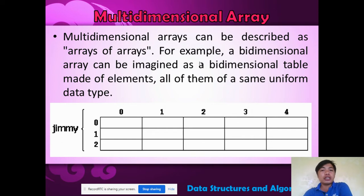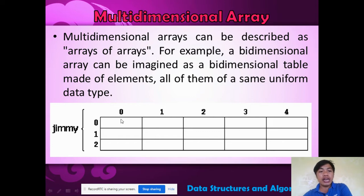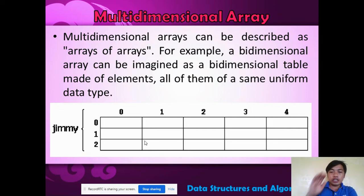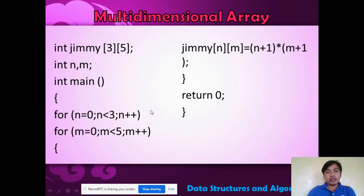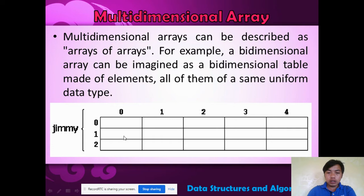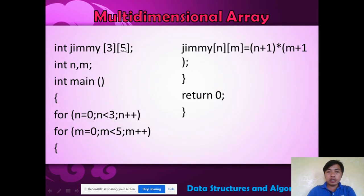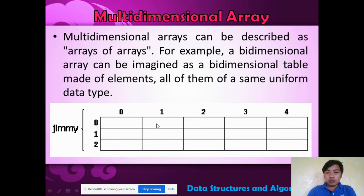We can also have multidimensional arrays. When I say multidimensional, it can be described as arrays of arrays — two types of arrays. It is a form of rows and columns. Rows are horizontal and columns are vertical. For example, an integer type array with three rows and five columns — one, two, three rows and one, two, three, four, five columns.